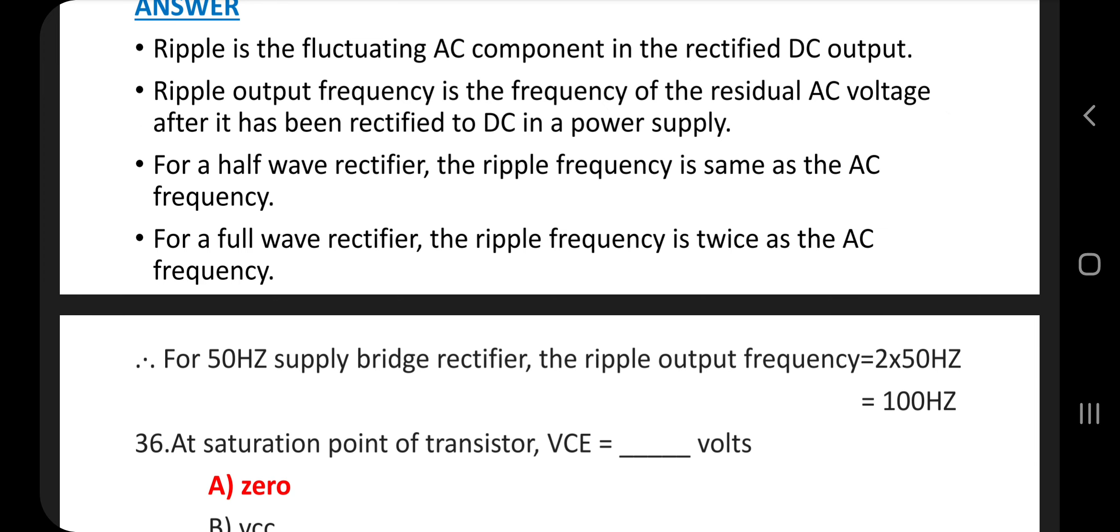Therefore, for 50 Hz supply bridge rectifier, the ripple output frequency is 2 times supply frequency, that is 2 times 50 Hz, which is 100 Hz.